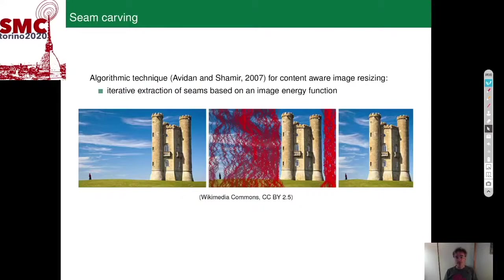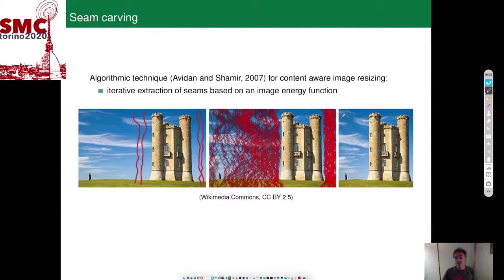In image processing, seam carving was introduced in 2007 by Avidang and Shamir as a technique for content-aware image resizing — that is, changing the aspect ratio of an image without changing the proportions of the most significant objects depicted. The idea is that in the image there are areas of high energy where the objects are, and areas of low energy. We can extract vertical seams of lower energy and carve them out one by one, getting a resized image that preserves the proportions of the most significant objects.